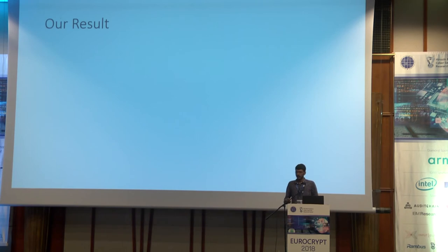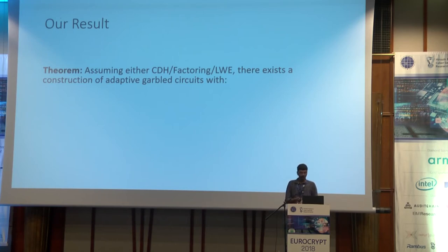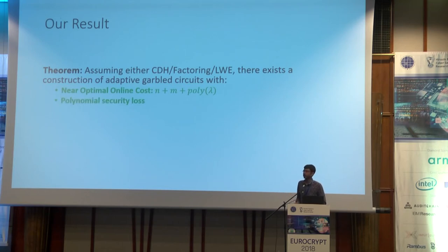In this work, assuming standard cryptographic assumptions such as CDH, factoring, or LWE, we can construct an adaptively secure garbling scheme with an online cost of N plus M plus poly(λ). So it is just an additive poly(λ) factor away from the optimal lower bound of N plus M. It incurs a polynomial loss in security and the construction is in the standard model.